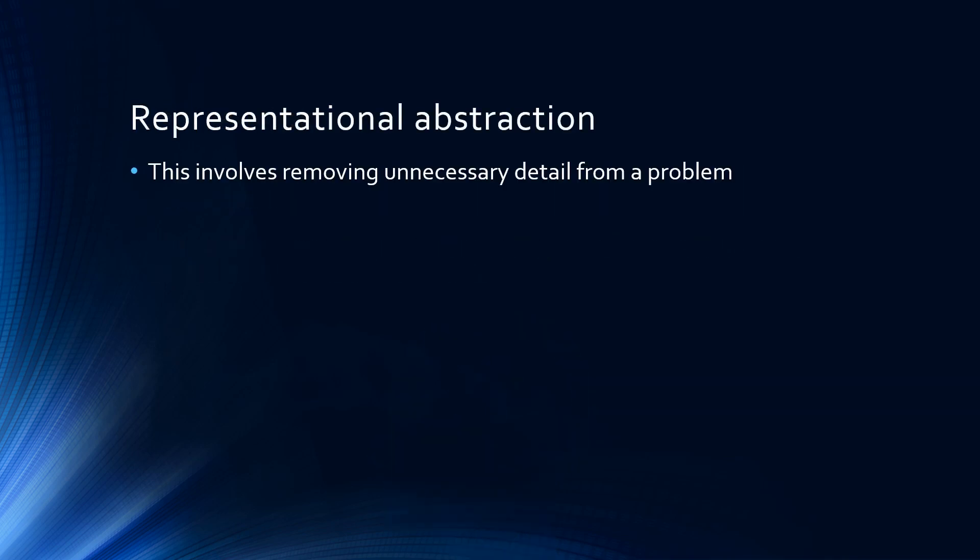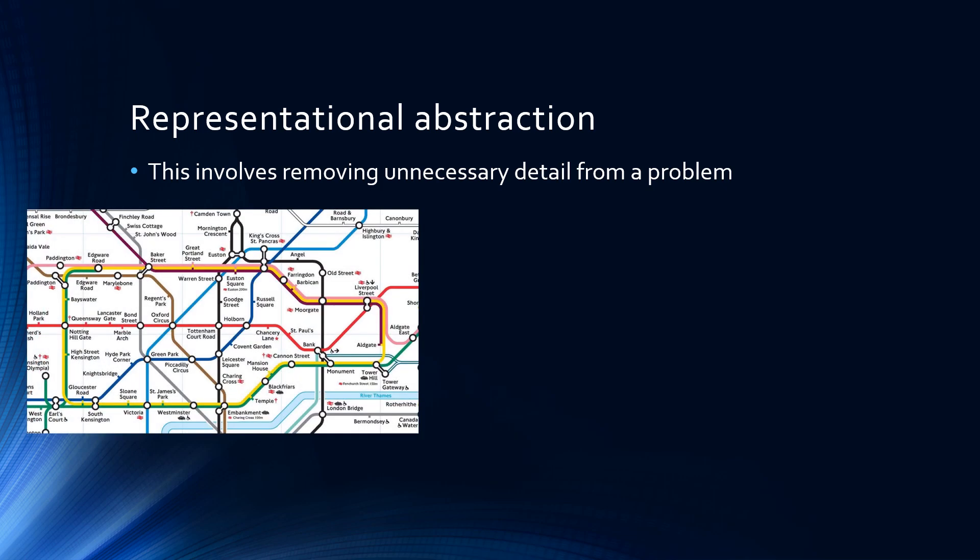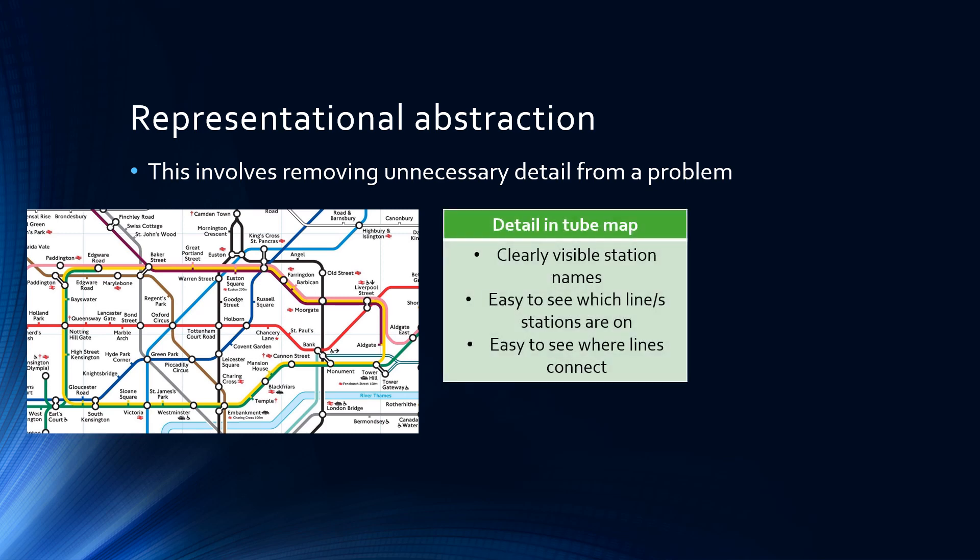Representational abstraction involves removing unnecessary detail from a problem. One of the most common examples of this is the tube map for London. In the tube map, you can clearly see the station names, because things have been moved apart so that the names don't bump into each other.